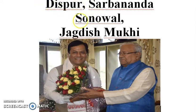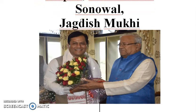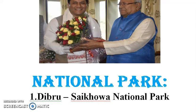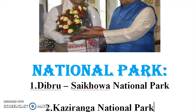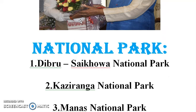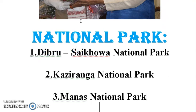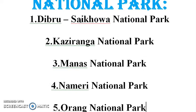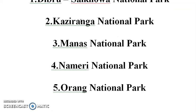Assam's capital is noted first. If you look at Assam's national parks, the number one national park is Dibru-Saikhowa National Park. The first place among Assam's national parks is Kaziranga National Park, followed by Manas National Park, Nameri National Park, and Orang National Park.